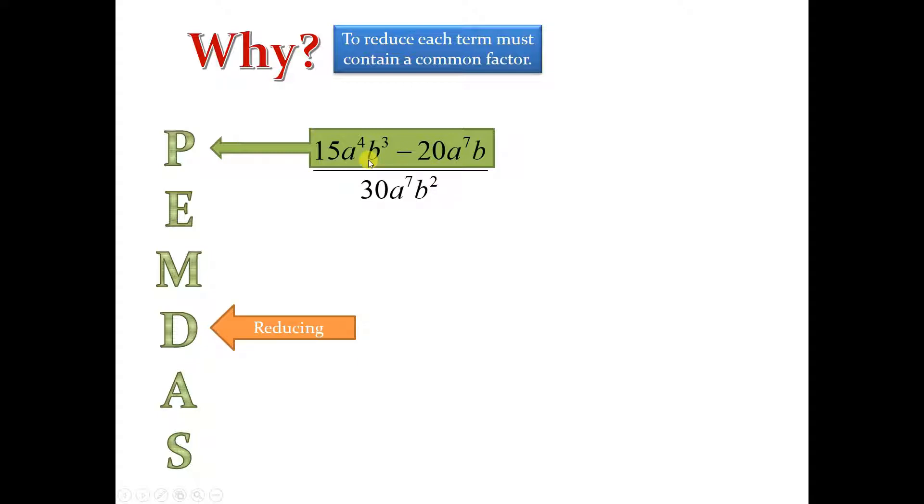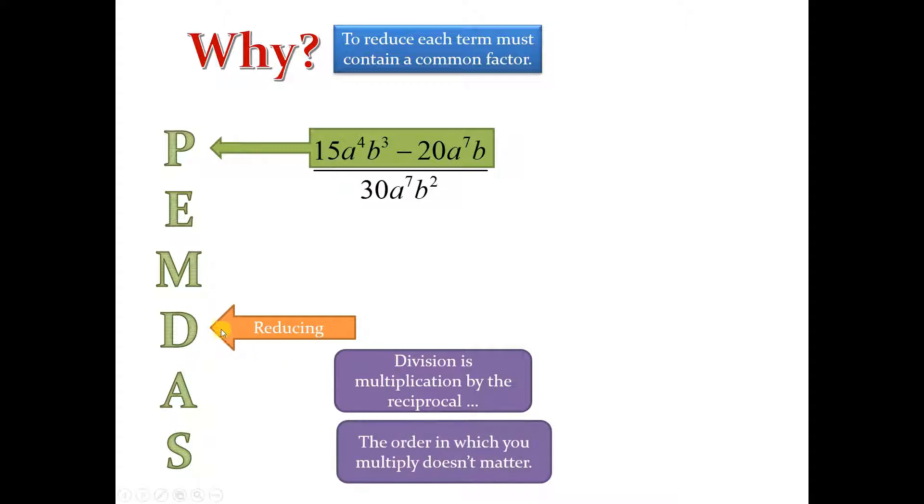And since I can't subtract these, I can't just skip it? Well, here's the thing. Division is the multiplication by the reciprocal, and the order in which you multiply doesn't matter. Like, 3 times 5 is the same as 5 times 3.